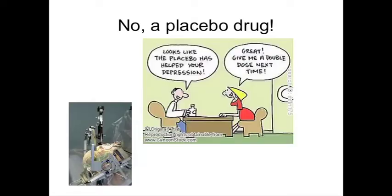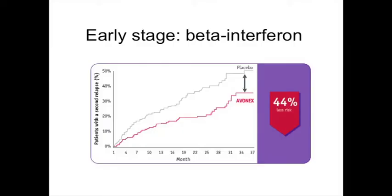You can do placebo in surgical trials — this is sham neurosurgery. This was done famously in a Parkinson's disease trial where people had a burr hole put in but didn't have the fetal cells injected — a stem cell trial. So it's possible to construct placebo-controlled trials even in the most unlikely settings. That's why we do placebo — that's how we find out if a drug really works. In relapsing-remitting MS, we found out that beta-interferon really did work on the first Avonex trials. The reduction in relapse rate was better than placebo.